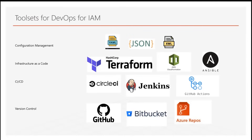For version control, which helps manage state — allowing us to move from version one to version two, or roll back from version two to version one if there are issues — we can use popular tools like GitHub, Bitbucket, or Azure DevOps. Out of these toolsets, we are going to look at Terraform today. In this webinar we are not going to integrate with CI/CD; we are going to execute Terraform directly through our CLI, but that can also be done through a CI/CD platform. We are going to show you the power of Terraform and how it can be used to manage Okta configurations.